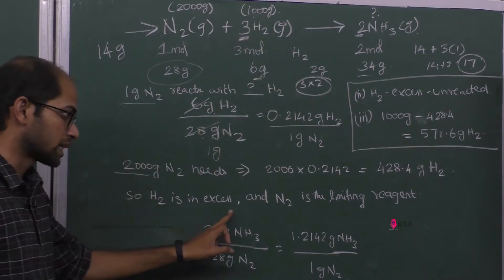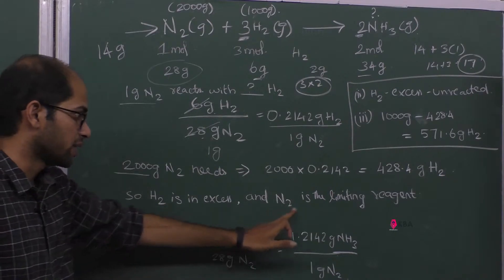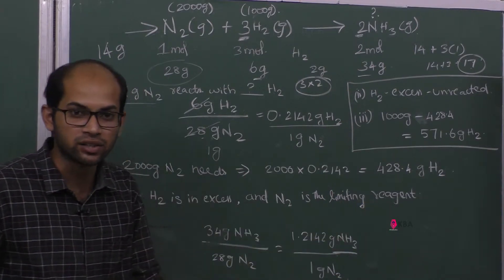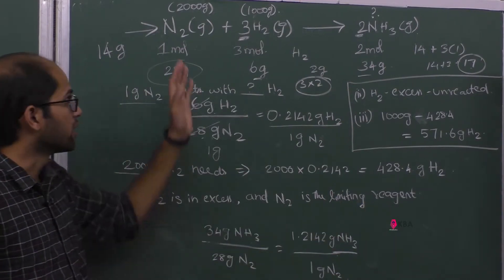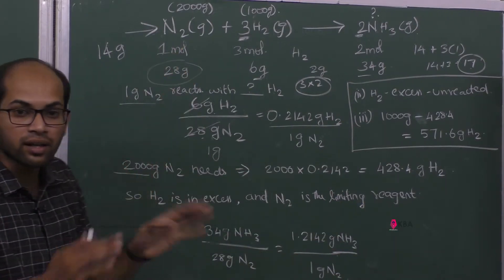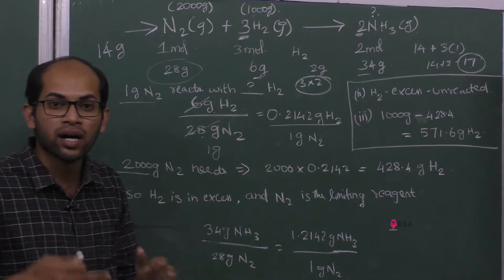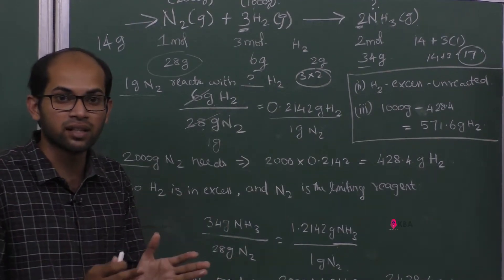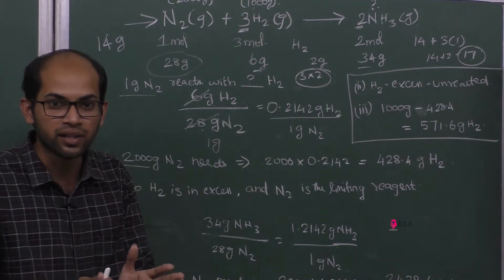H2 is in excess and N2 is the limiting reagent. We only have 1000 grams of hydrogen but only 428.4 grams are needed, so hydrogen is in excess and nitrogen is the limiting reagent.